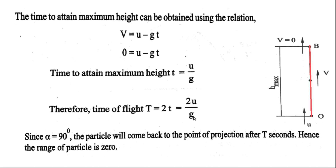Since the angle of projection alpha is 90 degrees, the particle comes back to the point of projection. Therefore, the horizontal range R will be 0.